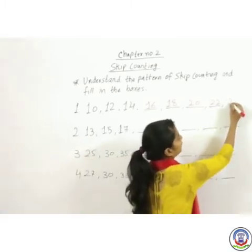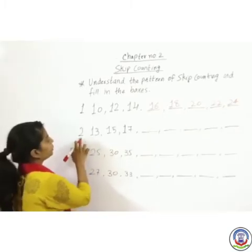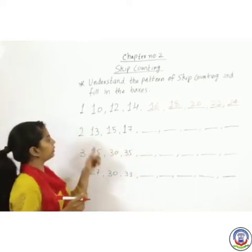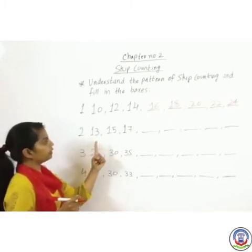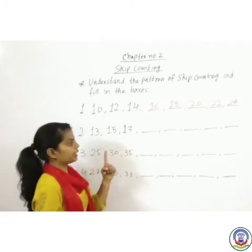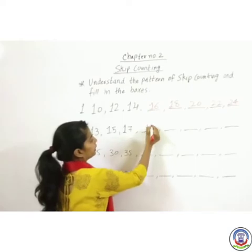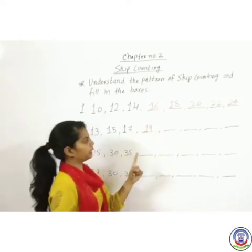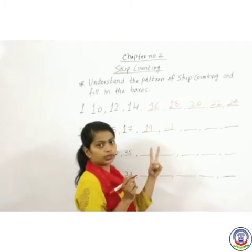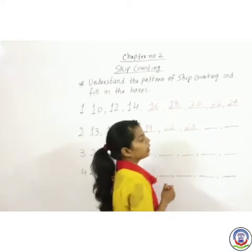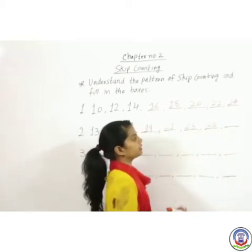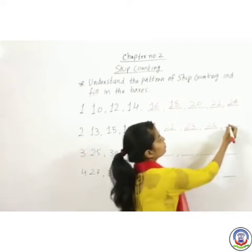Number 2 — the numbers given are 13, 15, 17. We check the consistent counting: after 13 comes 15, so we are skipping 2 numbers each time. We write 19, then 21, then 23, then 25, then 27.